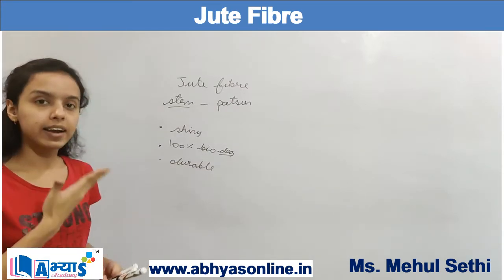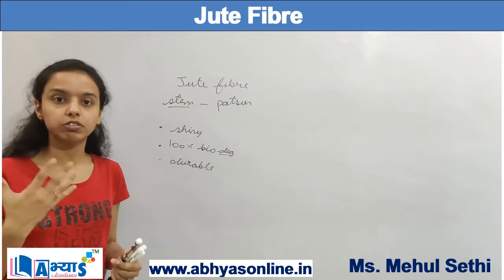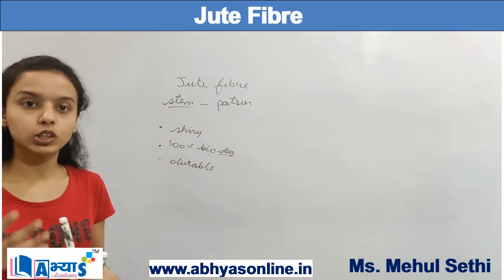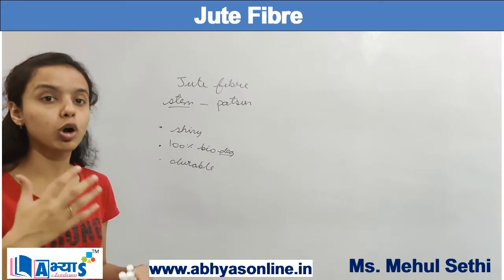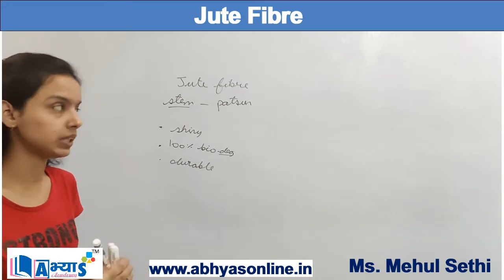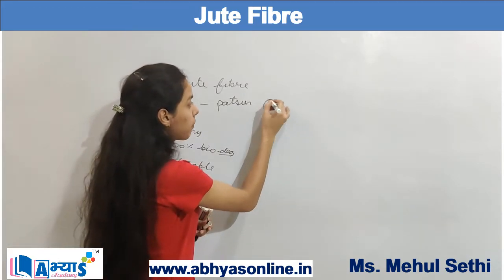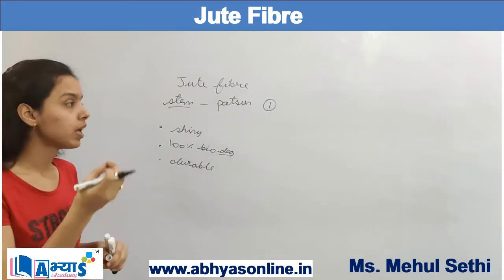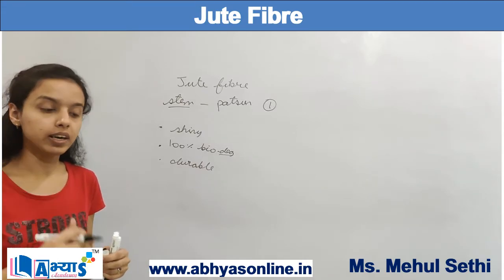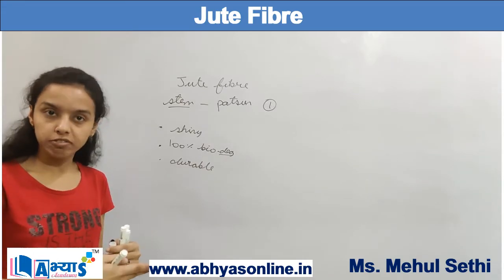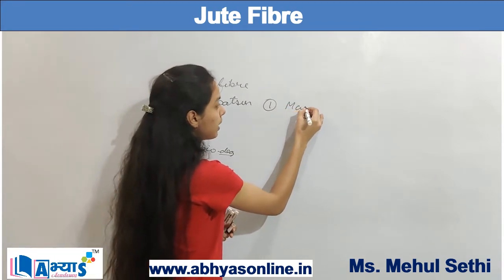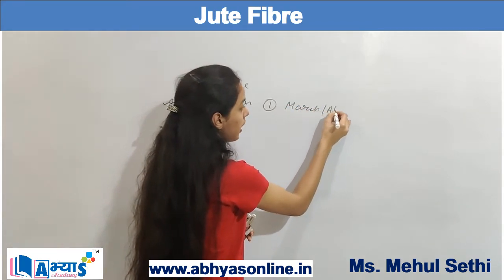Those were some of the characteristics of the jute plant. Now let us consider the processes used to obtain the jute fiber. The first step for the formation of jute fiber is that the seeds of the jute plant are sown at the beginning of the rainy season, in the months of March and April.